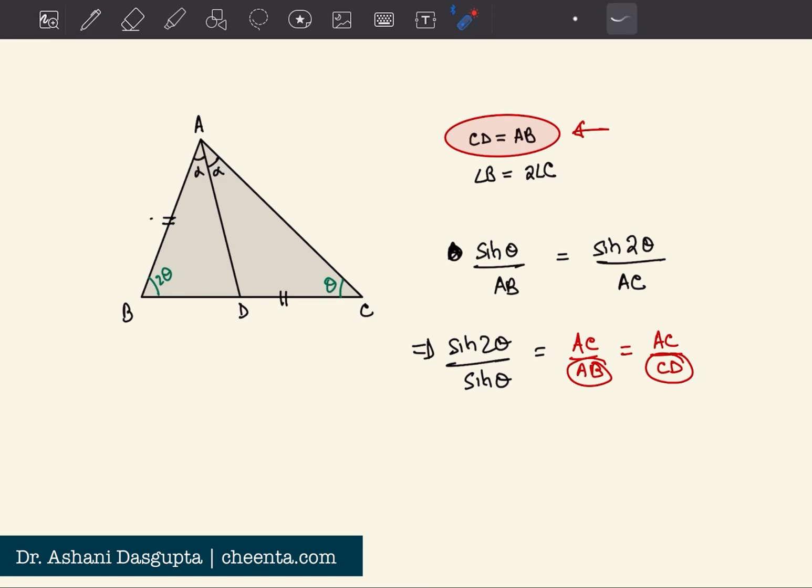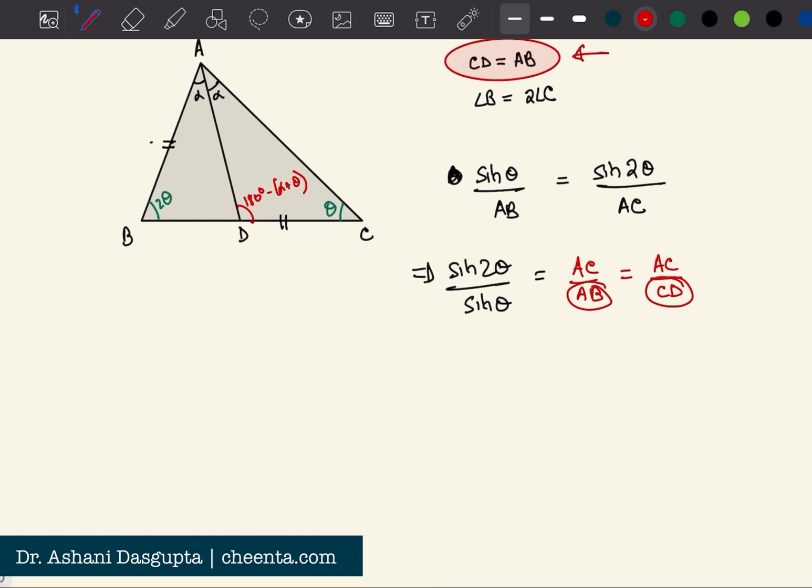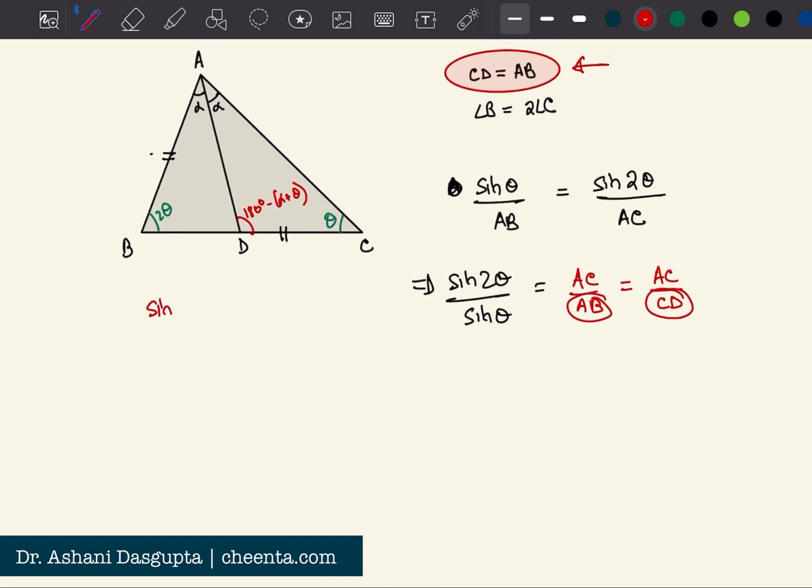Okay, now let's apply the sine rule in this triangle. This angle is 180 degrees minus alpha plus theta. So we can say sine of 180 degrees minus alpha plus theta by AC is equal to sine of alpha by CD.